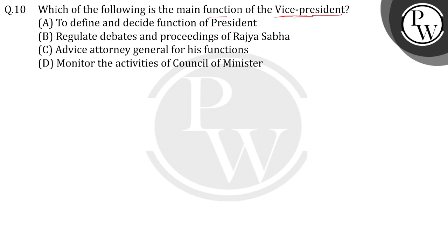The options are: to define and decide the functions of the Vice President; to regulate the debates and proceedings of the Rajya Sabha; to advise the Attorney General for his functions; and to monitor the activities of the Council of Ministers.